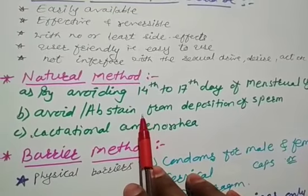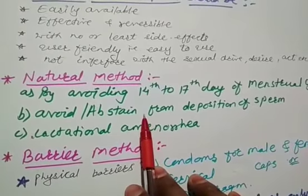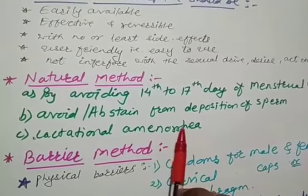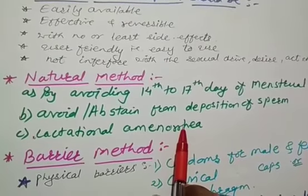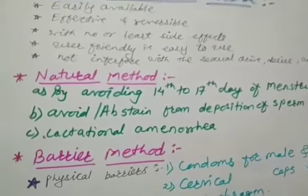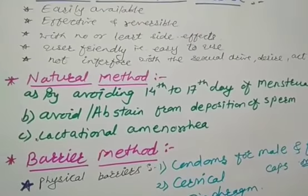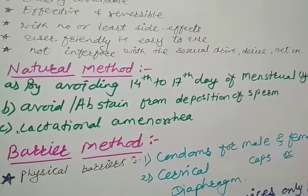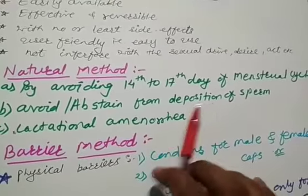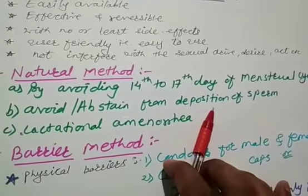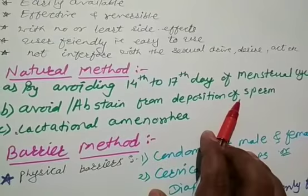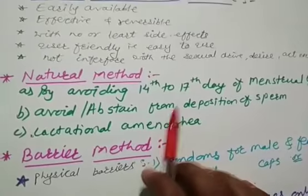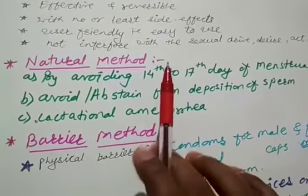So in this method what happens, it is another method that is included into natural method. In this the male partner withdraws his penis from the vagina just before ejaculation. So what happens is it will avoid insemination and failure can occur due to the pre-ejaculatory insemination of sperms or failure to withdraw penis before ejaculation. The sperms that are deposited before it is withdrawn, it will avoid or abstain from deposition of sperms. So this method is included in withdrawal method or coitus interruptus. Interruption is included in natural method.